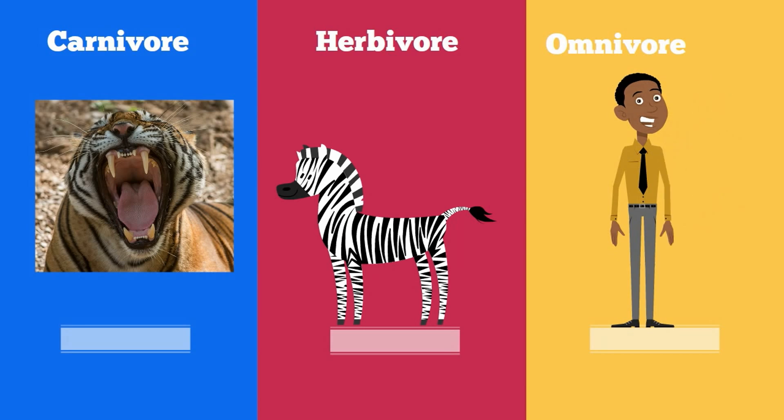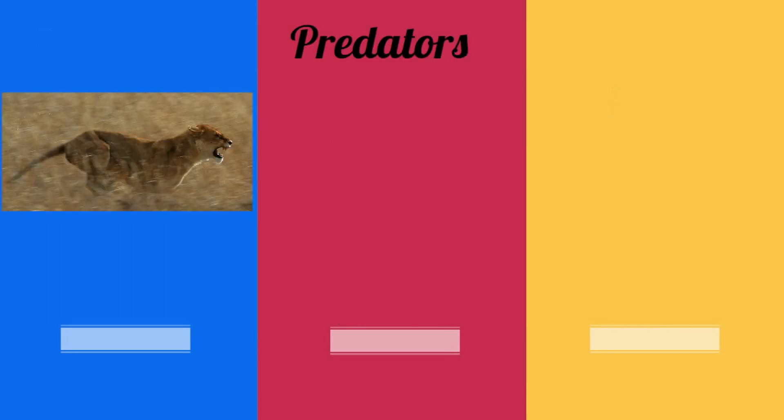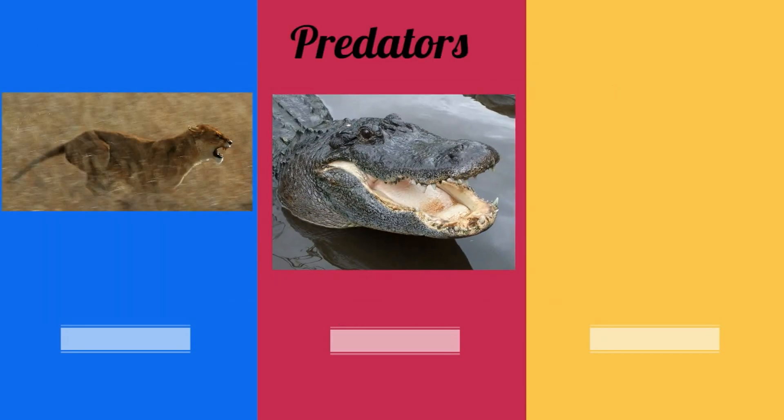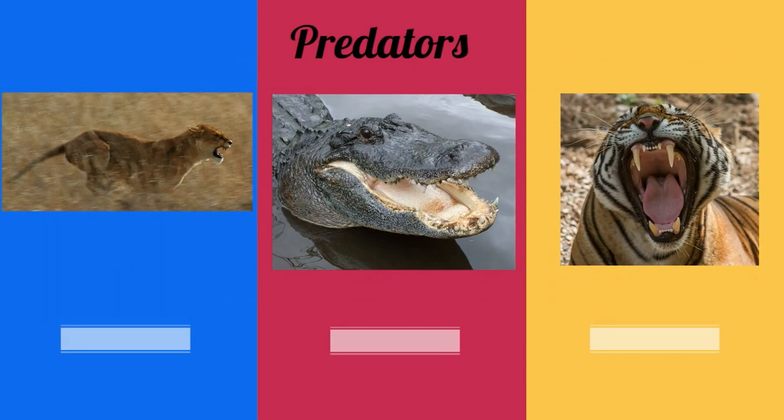Many people think of lions, alligators, or tigers as predators, but there is a huge number and variety of different predators.